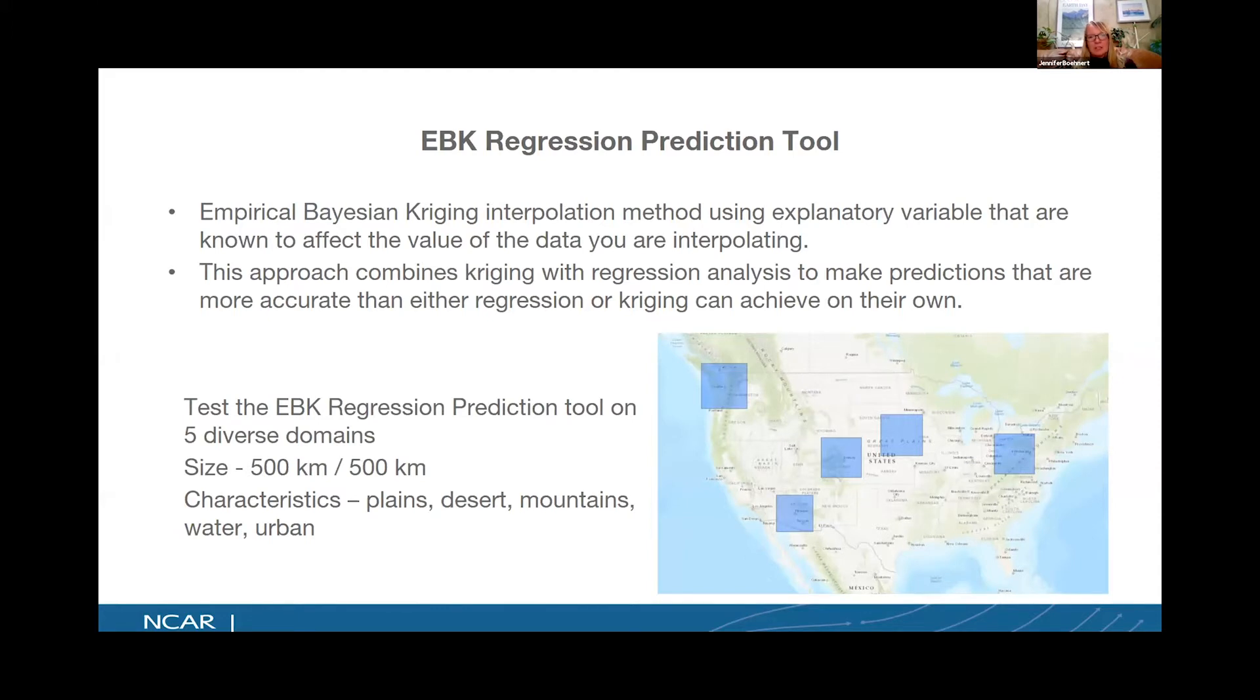In this project, we took five different locations within the continental US. Each of those locations, the domain was 500 kilometers by 500 kilometers. And we took a variety of different topographic characteristics. So we have a few places which are in the plains, we have one of our locations in the southwest desert, we have mountainous locations, locations along the Pacific Northwest, as well as different urbanization areas within those different domains.